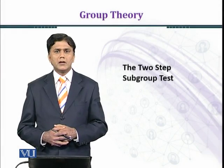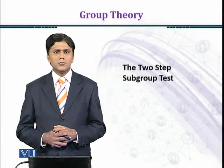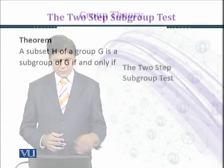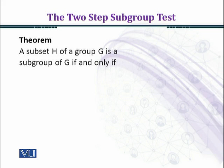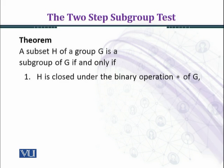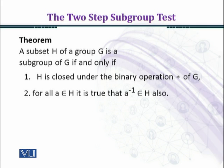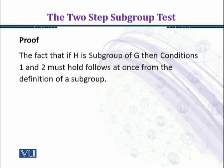In this module we shall discuss the two-step subgroup test theorem. A subset H of a group G is a subgroup of G if and only if the following conditions are satisfied: (1) H is closed under the binary operation star of G, and (2) for all a belonging to H, a inverse belongs to H — that is, the inverse of every element of H exists in H.